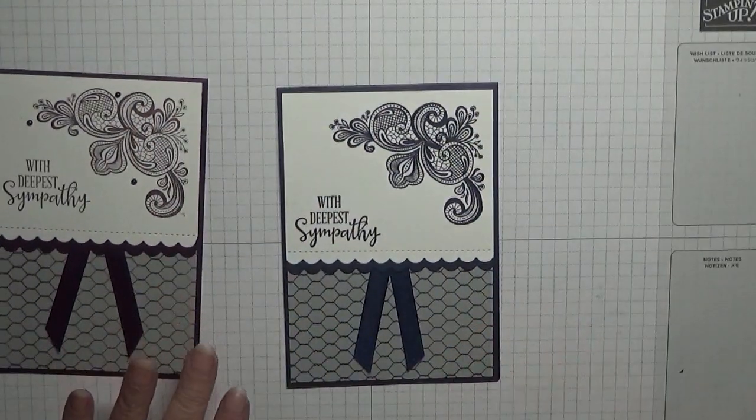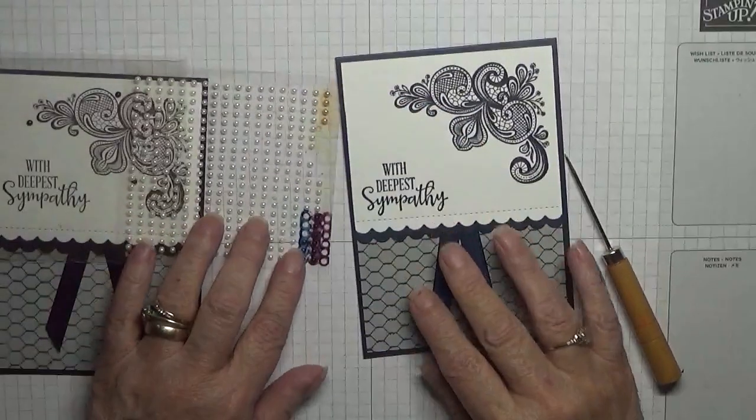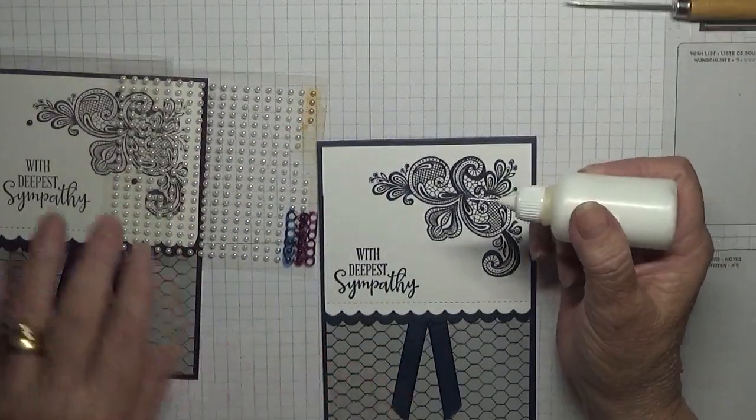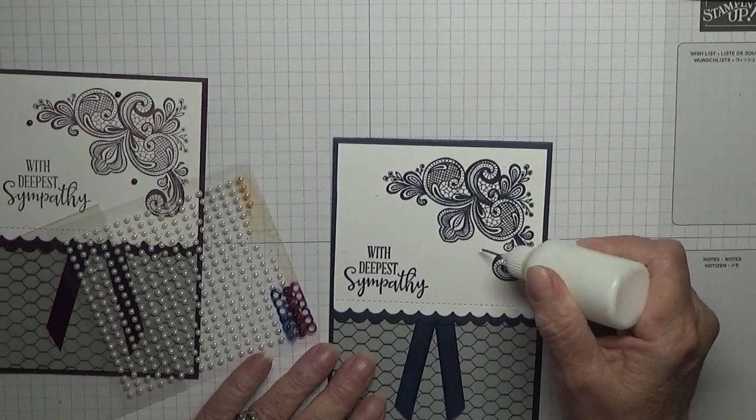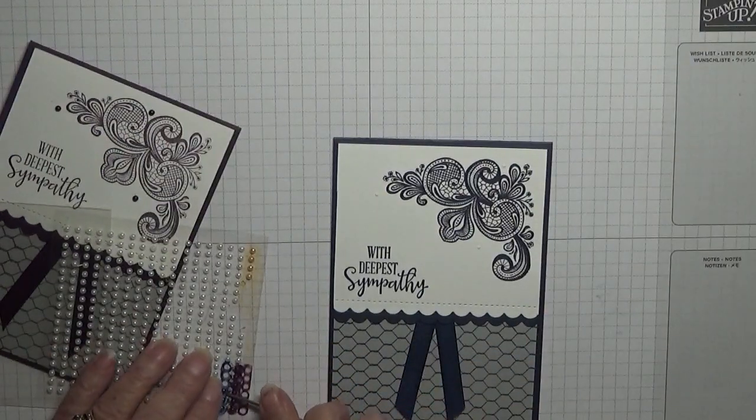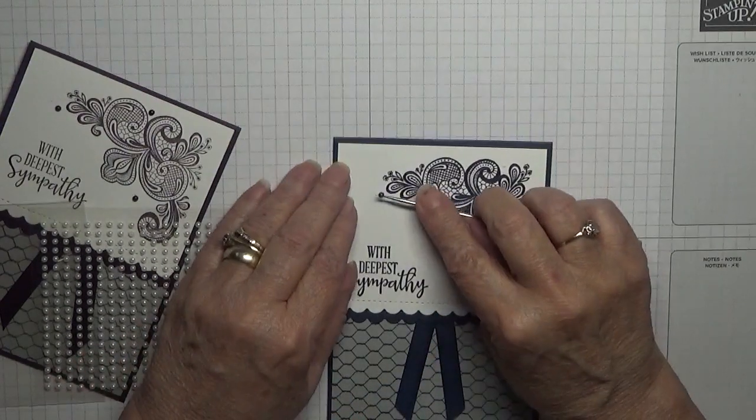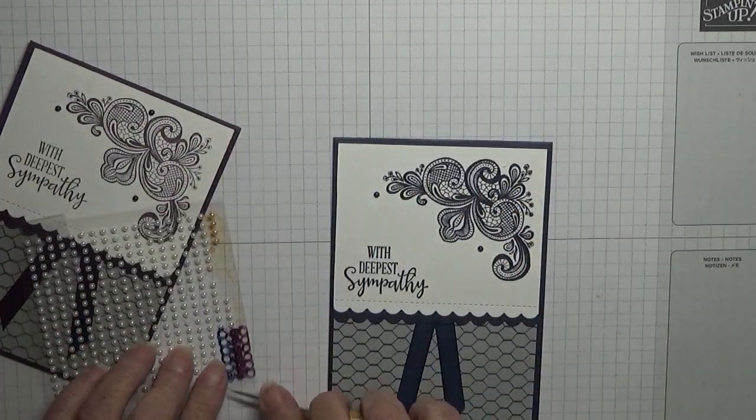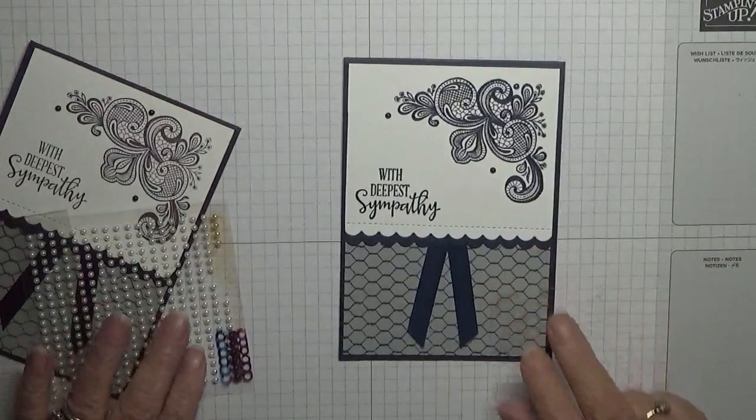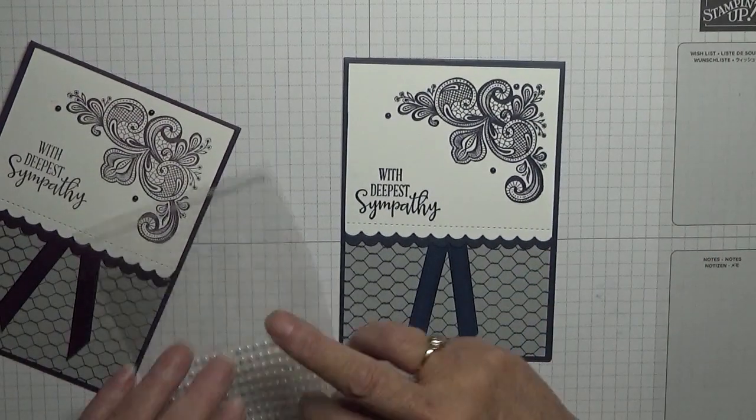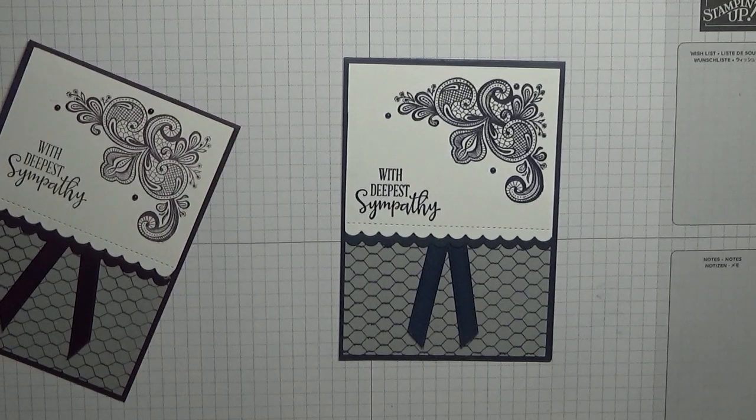All that's left is to add some gems. Now I have got some pearls that I've colored in with Night of Navy blender pen, and I'm going to stick these down. I'm only going to put three down, that's all we need. And that is our card for today.